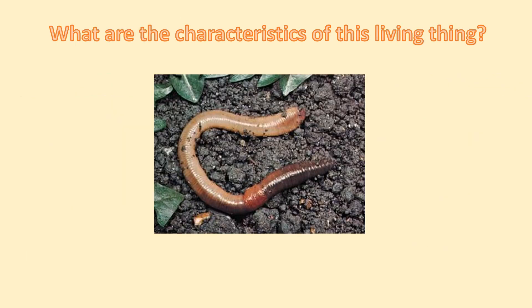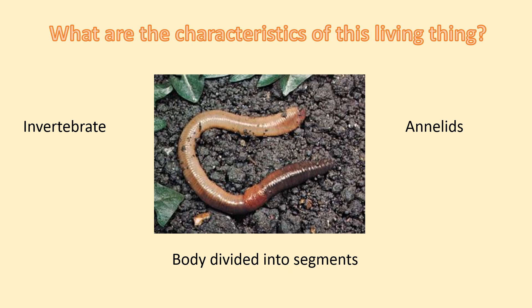Now let's look at this picture. What are the characteristics of this living thing? What is this animal called? It's a worm. Think back to our previous learning — what category did the worm go into, and what characteristics do they have? It's an invertebrate — we know that because it doesn't have a backbone. And it fits into the annelids. Its body is divided into segments, which we can see from the pictures. These little segments over here, into parts. Smooth.